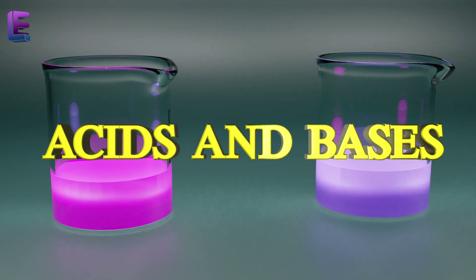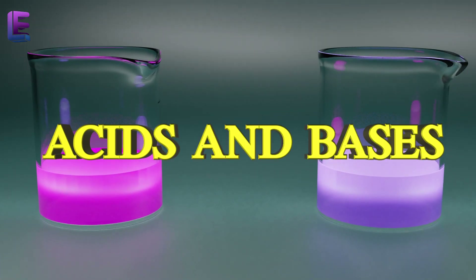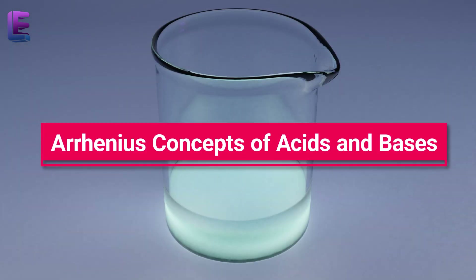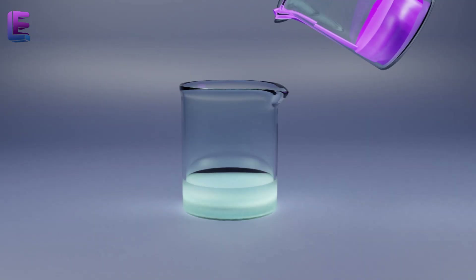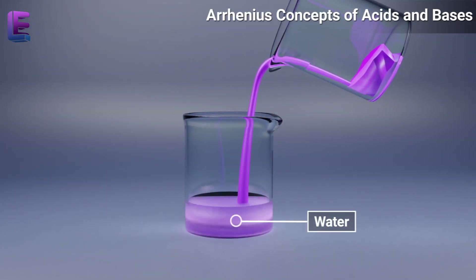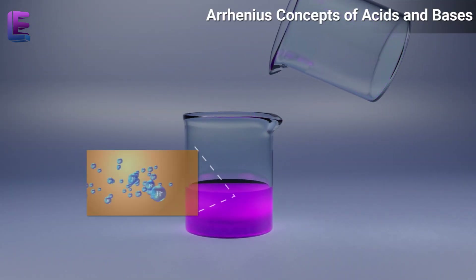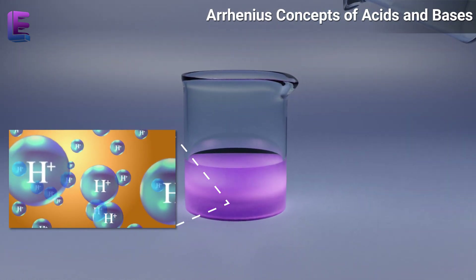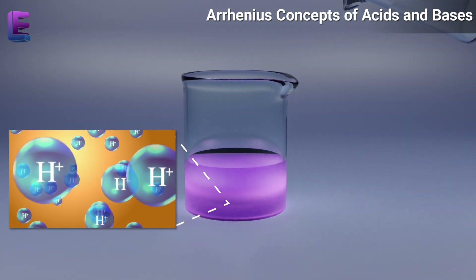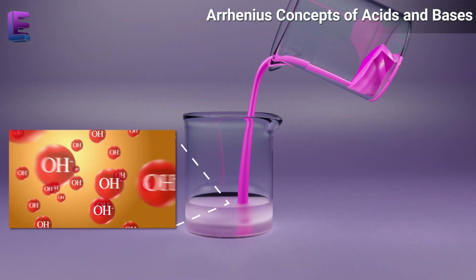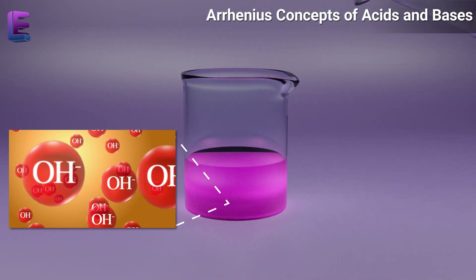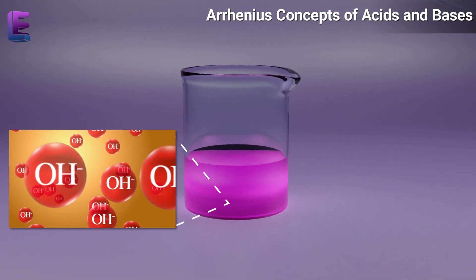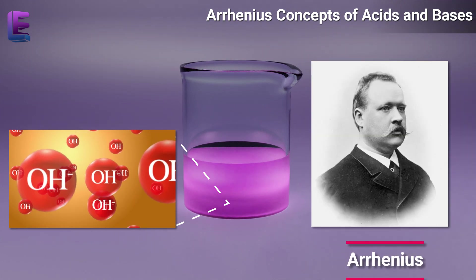Acids and Bases. Arrhenius' concepts of acids and bases: the substances that dissolve in water to produce H-plus ions are called acids, and the substances that dissolve in water to produce hydroxyl ions are called bases, as postulated by Arrhenius.